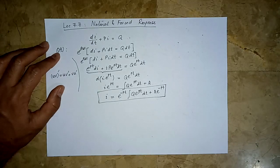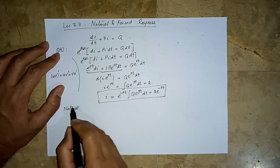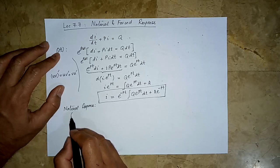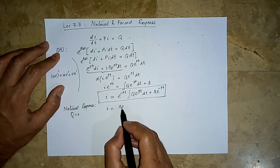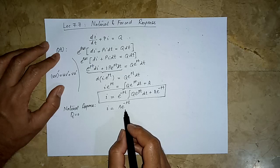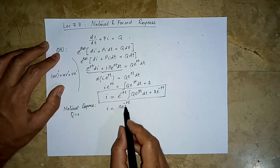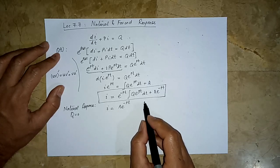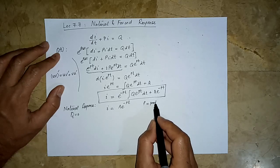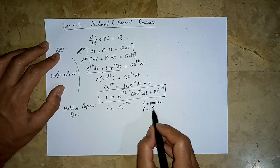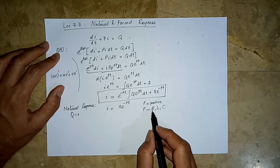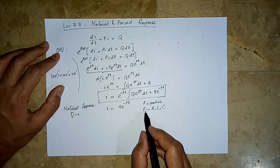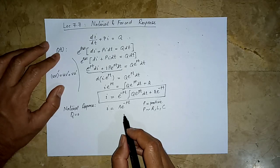Now let us look at the natural response only. When we discussed the natural response there was no forcing function in the circuit, meaning q equals zero. If q is zero, the integral term disappears and we are left with i equals A·e^(-pt). This is the form of the natural response. It approaches zero because this is a decaying exponent — p is always going to be positive, since p depends on values of R, L, and C. Unless the Thevenin equivalent has negative resistance, p will always be positive, so this is a decaying exponent that dies out with time.